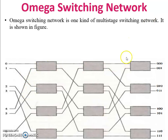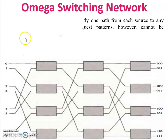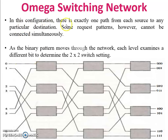Omega switching network is one kind of multi-stage switching network. There are multi-switching stages at different levels as shown in the figure. It is used to control processor-memory communication in a tightly coupled or loosely coupled system, so it is mostly used in multiprocessor systems. In this configuration, there is exactly one path from each source to any particular destination.